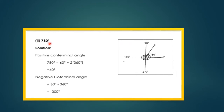Second part: 780°. 780° = 60° + 2 × 360°, so the positive co-terminal angle is 60°. The negative co-terminal angle is 60° − 360° = −300°.